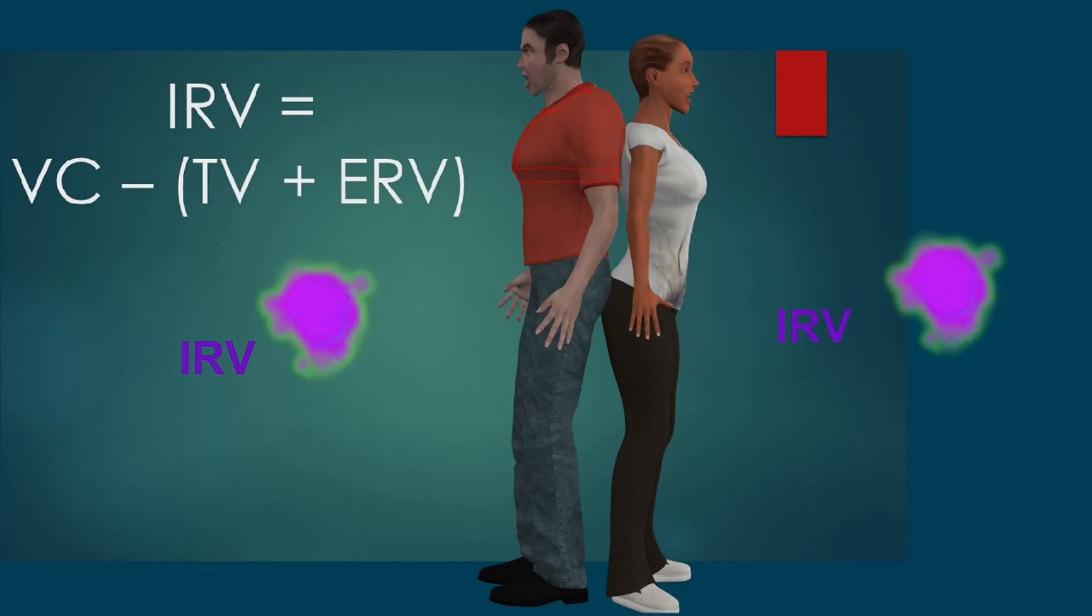So the way to measure the inspiratory reserve volume on one of the more common spirometers is that you subtract the TV and ERV values from the vital capacity value.